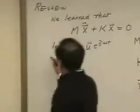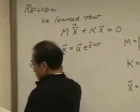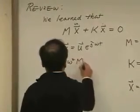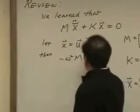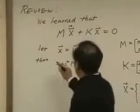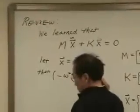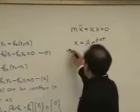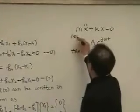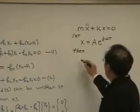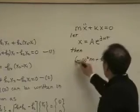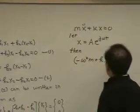Then what we obtain is minus omega square M matrix plus K matrix and U equal to zero. In this case, what we obtain? Then we obtain minus omega square M plus K, A equal to zero.